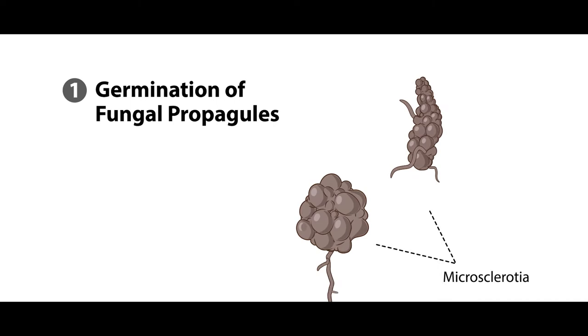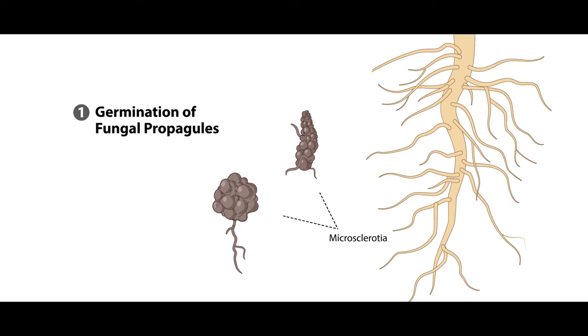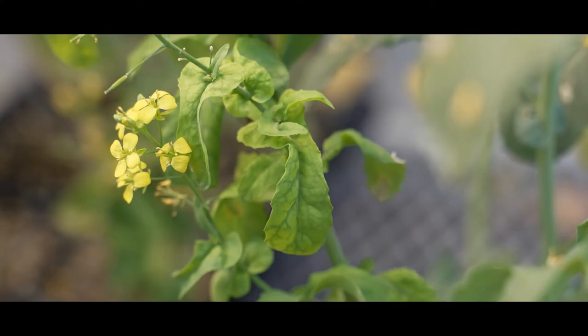Microsclerotia are present in the soil and dead plant tissue, and root exudates stimulate the development. This is necessary to successfully infect the roots at the most susceptible location of the fast-growing root tip.